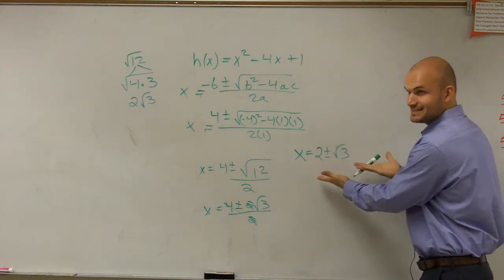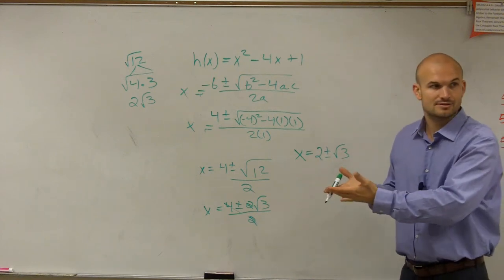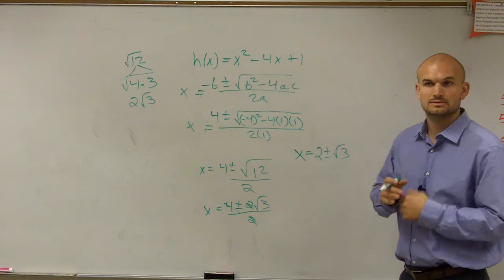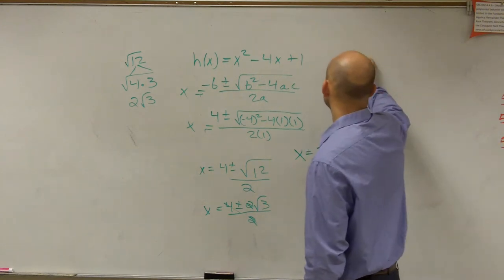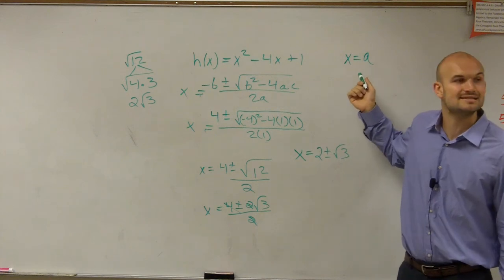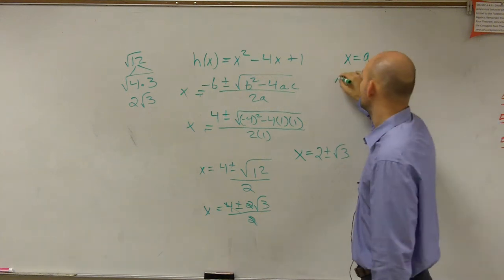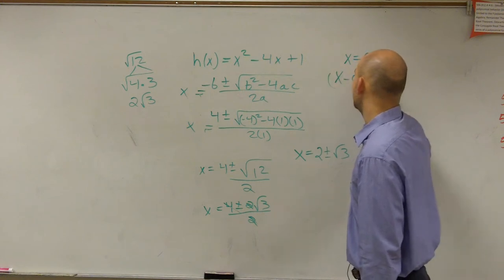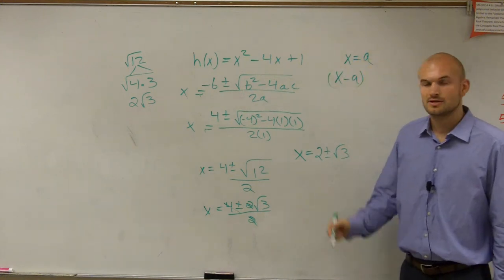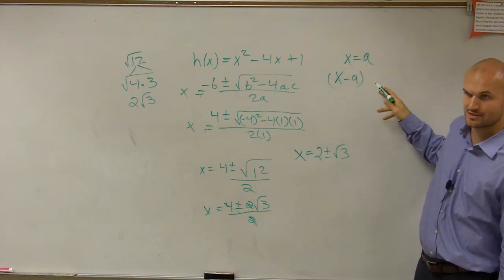So remember, ladies and gentlemen, if this is my zeros, how do we go from zeros to factors? Well, remember, the zeros of a formula, if I say x equals a is a zero, then what is the factored form of that? x minus a is a factor. So if a is a zero, x equals a is a zero, then x minus a is a factor.